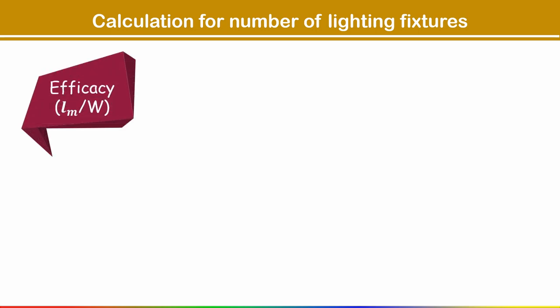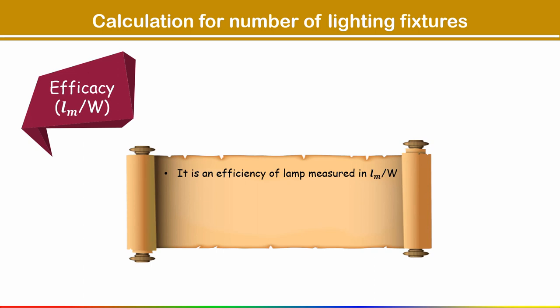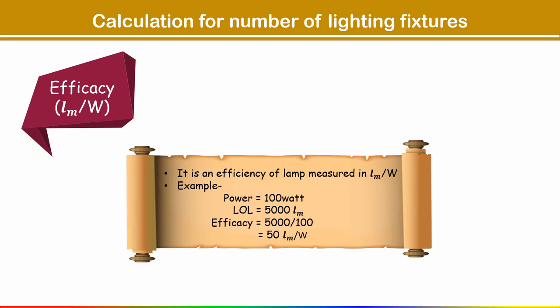Next is efficacy. It is the efficiency of a lamp measured in lumens per watt. The lumens value you will get from the manufacturer of the lamp. For example, if a lighting fixture has a power value of 100 watts and lumens of lamp is 5000, then efficacy equals 5000 divided by 100, which is 50 lumens per watt.